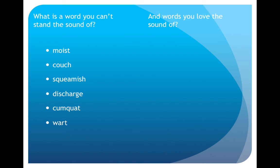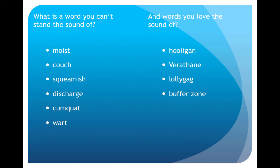What about words you love the sound of? This may be easier for someone who learned English as a second language, because people who come to English as a second language listen to English a lot more than native speakers, at least when they were learning it. Some examples: hooligan, varathane, lollygag, buffer zone, swish, nibble. These are very personal, obviously — words you like or don't like — but more personal than those other lists of sweet-sounding or harsh-sounding ones.